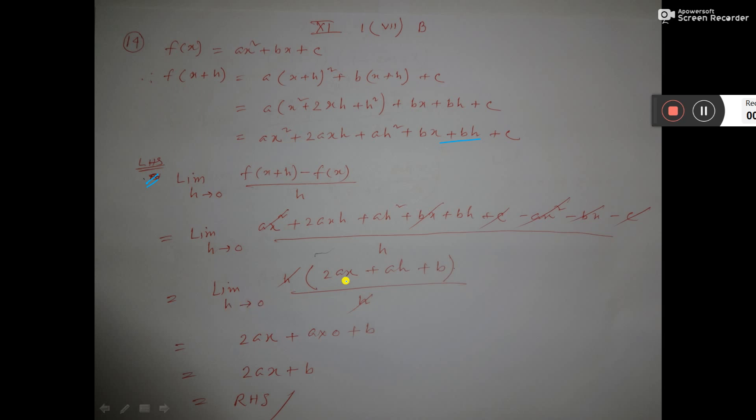Then down h and this h will cut. Now here h equals 0 you put, here you put 0, so this will be 0 only. Then 2ax plus b is the answer and the right hand side it is given this. So that's done. Thank you.